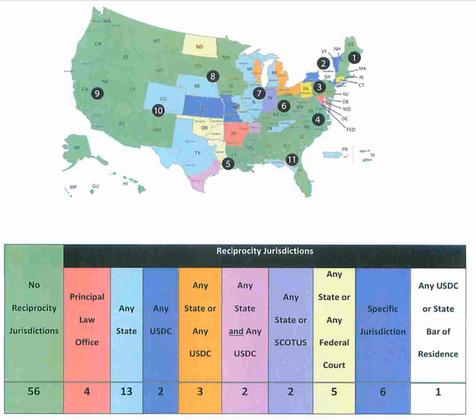Several district courts require attorneys seeking admission to their bars to take an additional bar examination on federal law, including the Southern District of Ohio, the Northern District of Florida, and the District of Puerto Rico. Pro hac vice admission is also available in most federal district courts on a case-by-case basis. Most district courts require pro hac vice attorneys to associate with an attorney admitted to practice before the court.